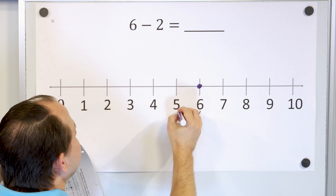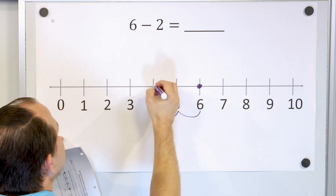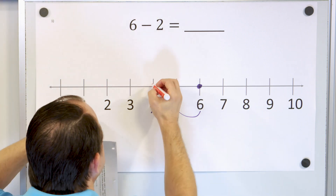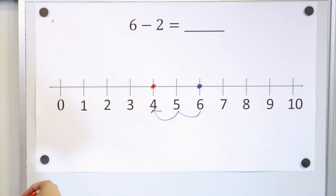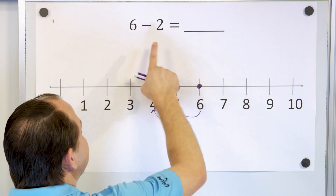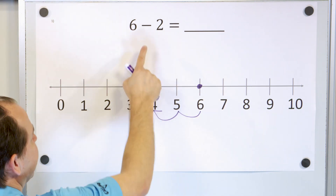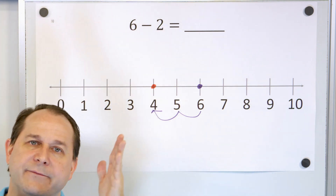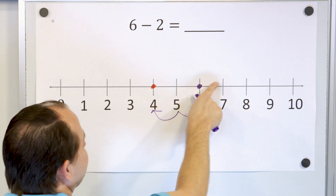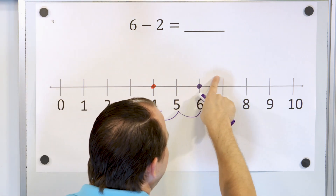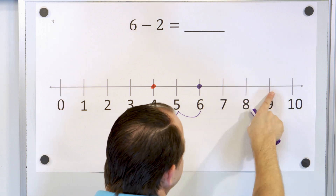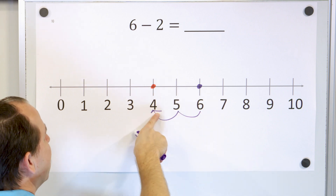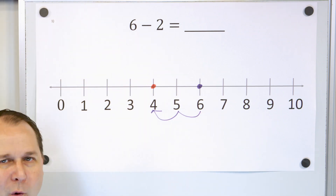So I go down one elephant and I go down another elephant and I land on the number four. So I start with six elephants — or six dollars — and when I subtract dollars, I go down. Subtraction means going to the left on the number line. When I add numbers, I go to the right. But if I subtract two dollars, I go to the left two dollars. So the answer is four.